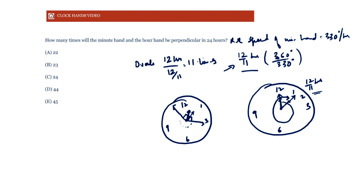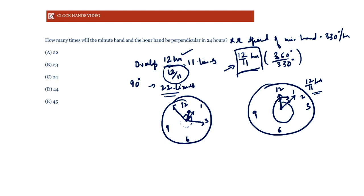Since the minute and hour hands overlap 11 times in 12 hours — meaning there are 11 such 12/11-hour periods — and they are at 90 degrees twice in each period, they will be at 90 degrees 22 times in 12 hours. If asked how many times they are perpendicular in 24 hours, the answer is 44 times.